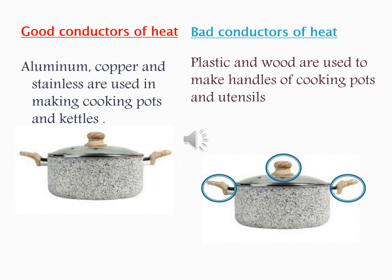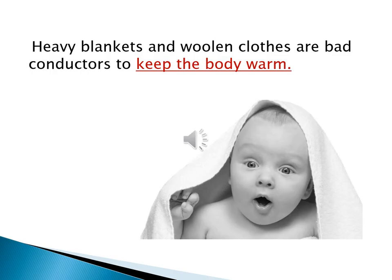In this slide, we will know the importance and usage of good and bad conductors of heat. Good conductors such as aluminium and copper are used in making cooking pots and kettles. Bad conductors such as wood and plastic are used in making handles of cooking pots and utensils. Also, heavy blankets and woolen clothes — as wool is a bad conductor of heat — are used to keep your body warm in winter.